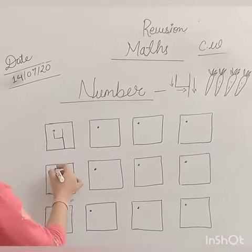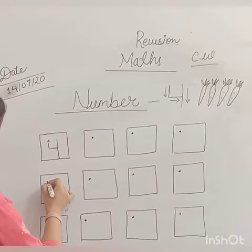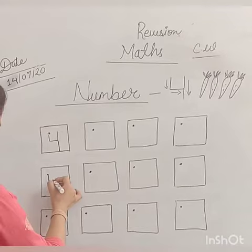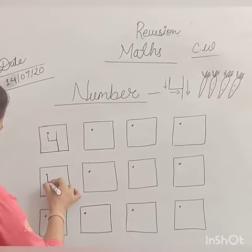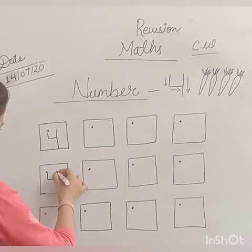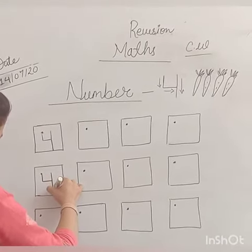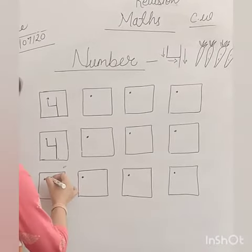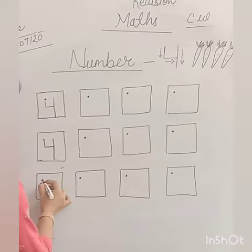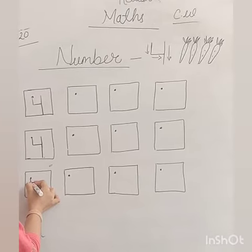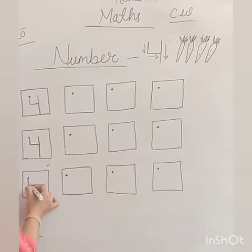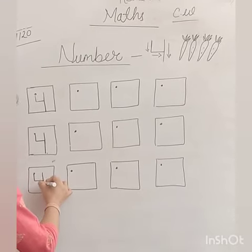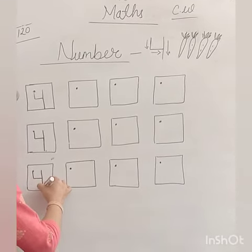Let's do it again. Start from the dot and make a standing line to the middle like this. Then you will make a sleeping line. After this you will make a standing line to the bottom line. Now again I am writing number 4. Start from the dot and make a standing line to the middle. Then you will make a sleeping line. After this you will make a standing line to the bottom line.